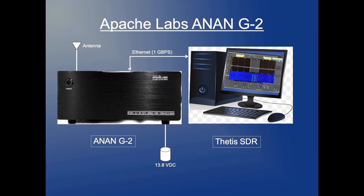The configuration of what we have is the following: two black boxes — one is the Anan G2, which truly is a black box, and the other is the PC. The Anan has an antenna connected directly to it, a 13.8 volt DC power supply, and an Ethernet cable. One gbps is recommended to connect these two bits of hardware. The PC must be a Windows PC and it runs the Thetis software defined radio.